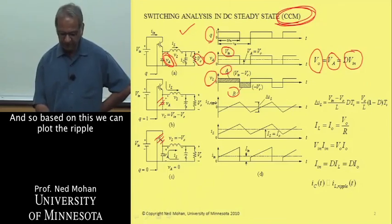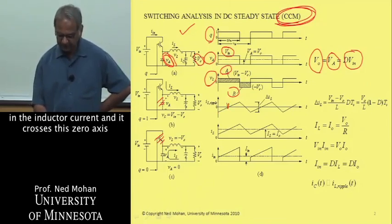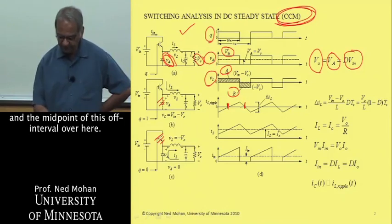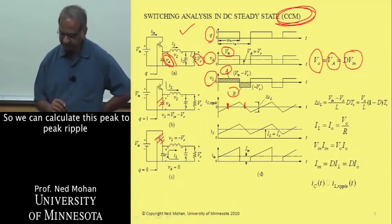And so based on this, we can plot the ripple in the inductor current, and it crosses this zero axis at the midpoint here, and the midpoint of this on interval, and midpoint of this off interval over here.